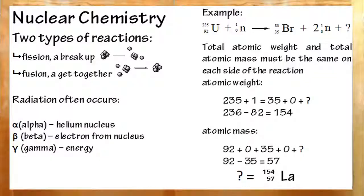To recap, there are two types of nuclear reactions. Fissions, where atoms break up, and fusions, where they get back together. There are three types of radiations. Alpha particles, which are just helium nuclei. Beta particles, which are electrons from the nucleus. And gamma radiation, which is just energy. You won't see this in the reaction.